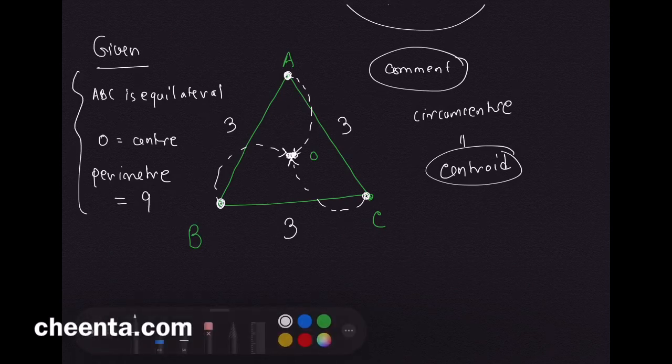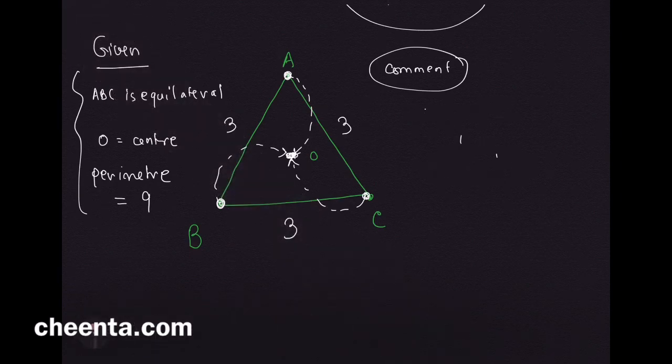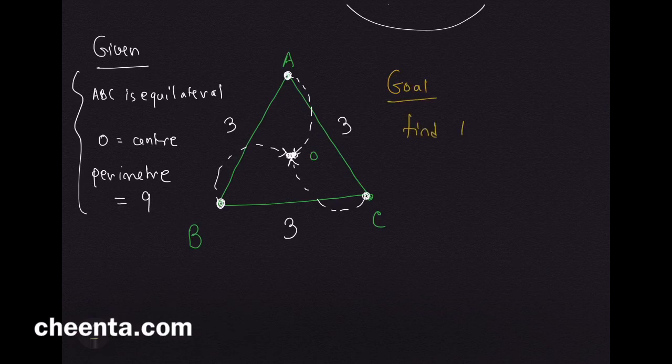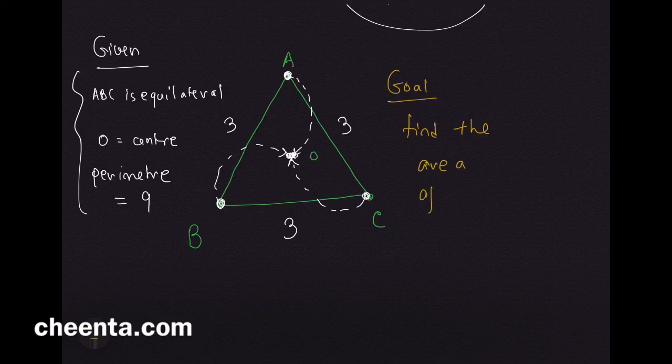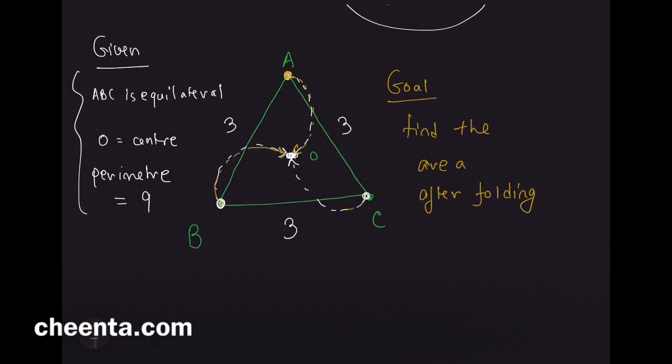The goal: find the area after the folding. And how is it folded? As I mentioned, A goes to O, B goes to O, and C goes to O.